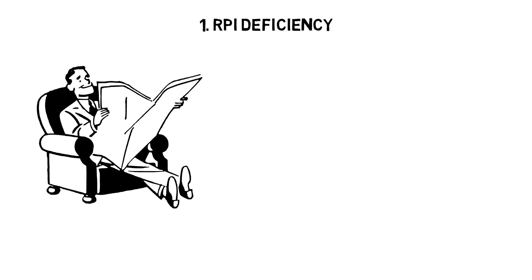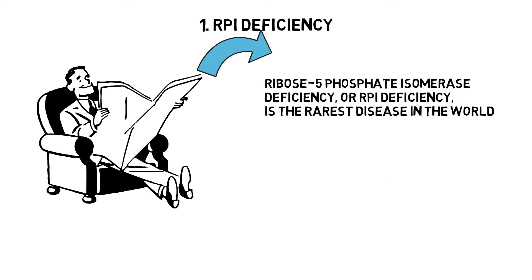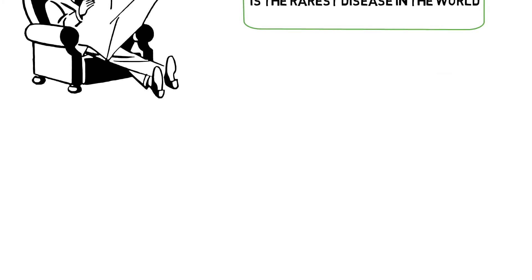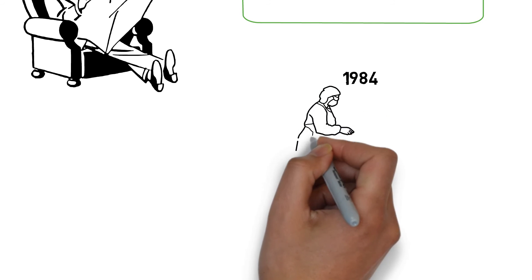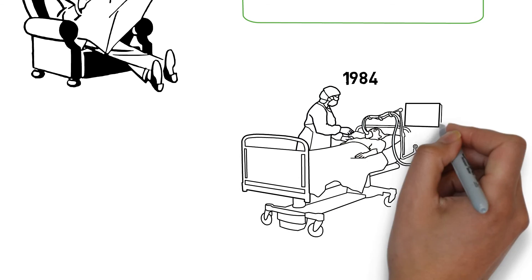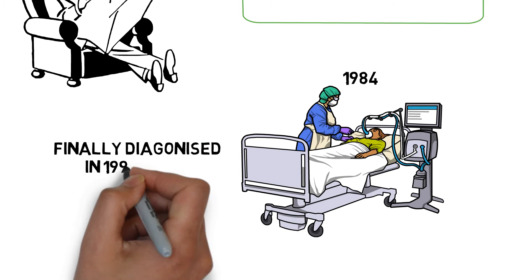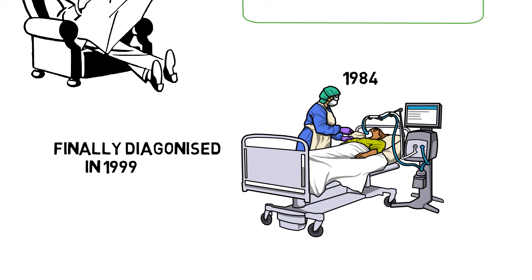Number 1: RPI Deficiency. According to the Journal of Molecular Medicine, ribose 5-phosphate isomerase deficiency, or RPI deficiency, is the rarest disease in the world with MRI and DNA analysis providing only one case in history. This came about in 1984, when the patient in question presented with a white matter disease, as found on an MRI, and was finally diagnosed in 1999. The molecular cause of the genetic pathway malfunction is still not understood to this day.